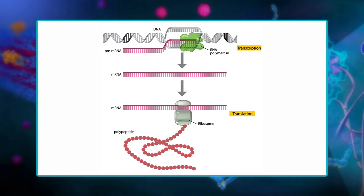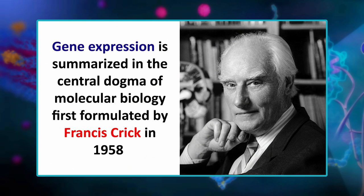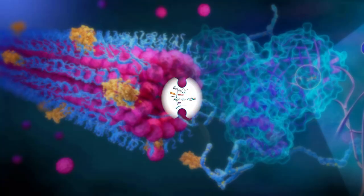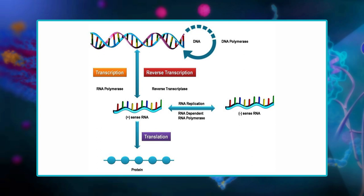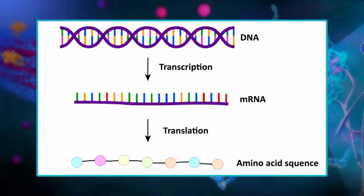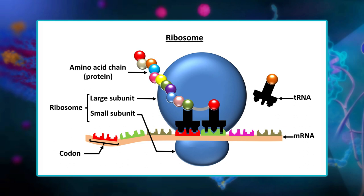Precisely, gene expression is the process of transcription of a gene into mRNA, the processing of that mRNA, and its translation into a protein for protein-encoding genes. Gene expression is summarized in the central dogma of molecular biology, first formulated by Francis Crick in 1958, further developed in his 1970s article, and expanded by discoveries of reverse transcription and RNA replication. The central dogma is that DNA is used as a template to transcribe RNA, and RNA is used to synthesize proteins on the ribosomes, giving you your unique phenotype.